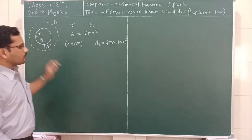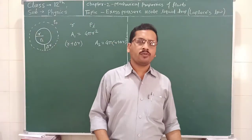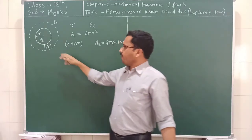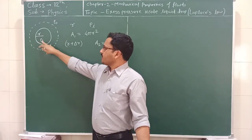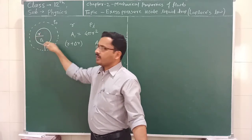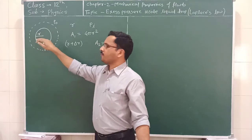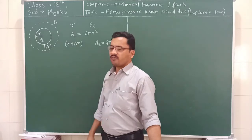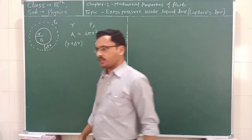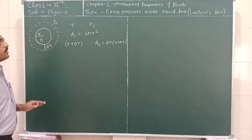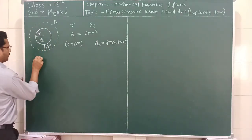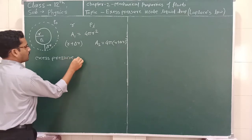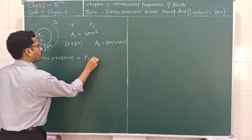We know that pressure and volume are inversely proportional to each other at constant temperature. So we can say that if the pressure is greater, then the volume must be less. Or if the volume is less, then the pressure inside the liquid drop is greater. And if the volume of the liquid drop increases, the pressure also decreases. So, the excess of pressure is equal to Pi minus Po.